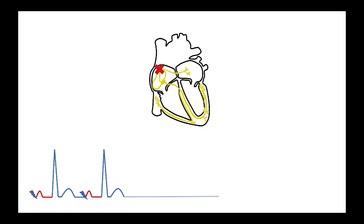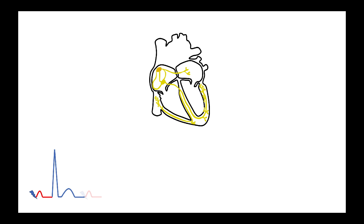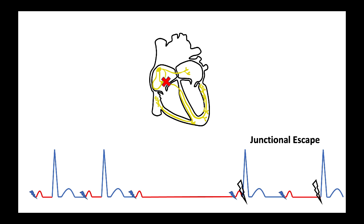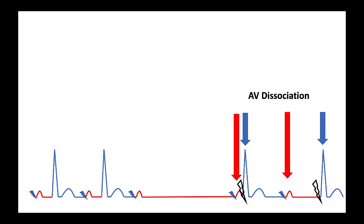For example, if sinus node depolarization fails, a pause occurs and the AV node as second in command kicks in as the pacemaker, escaping asystole — this is called junctional escape rhythm. Note the absence of P waves during the pause and during the junctional escape rhythm. In another example, if the sinus node depolarizes normally but the AV node fails to conduct, the ventricles don't see the SA nodal depolarization. The His bundle then kicks in as the cardiac pacemaker. This is an example of complete AV nodal block, where both the sinus node and junctional rhythms are occurring simultaneously but not related — signifying AV dissociation.